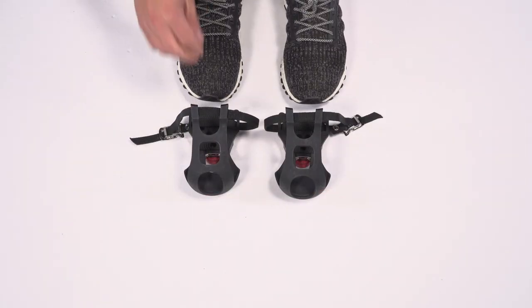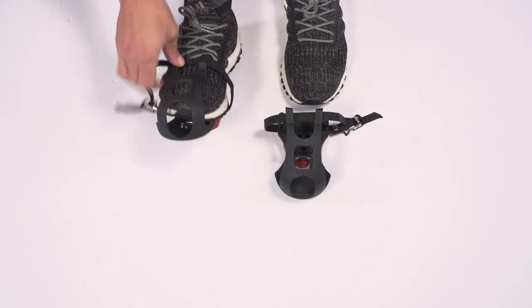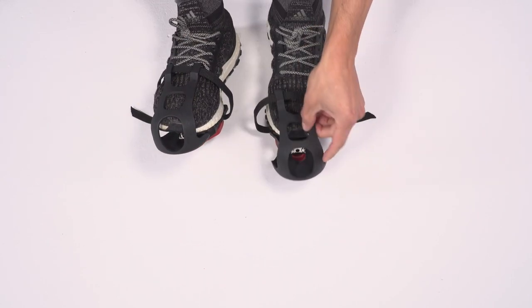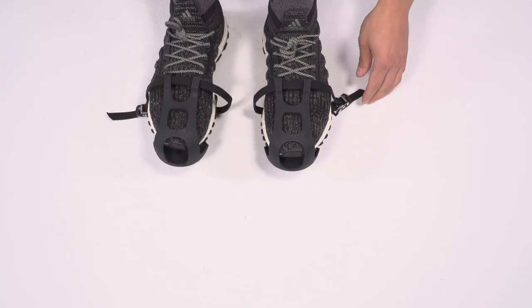Fit the toe cages over your athletic shoes. Make sure the buckles are positioned on the left side of your left foot and on the right side of your right foot.